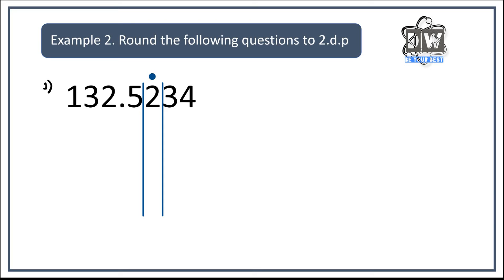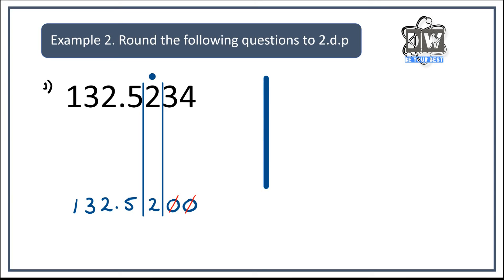Step one: all the numbers before the column stay the same — so we've got 132.5. All the numbers after the column turn into zeros. The number in the column either stays the same or goes up by one. This number is three, so it stays the same. I can get rid of the trailing zeros because they don't change the value. The answer is 132.52. The only difference from the first group of questions is which number we identify and column — the system stays exactly the same.